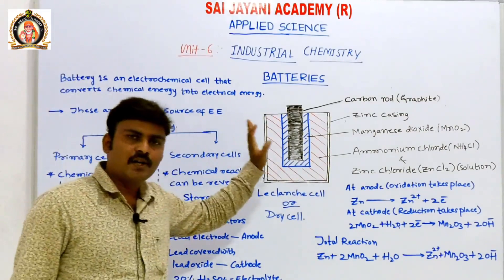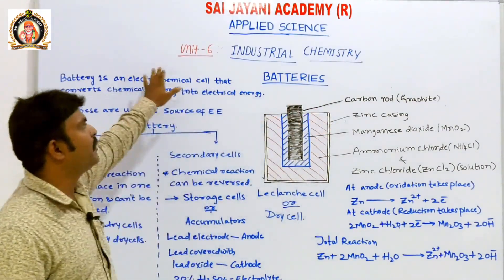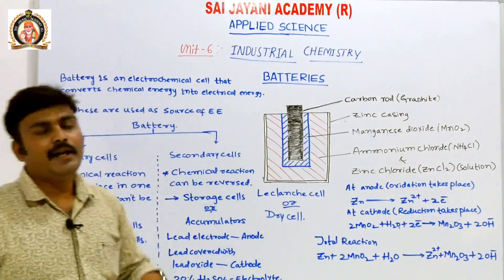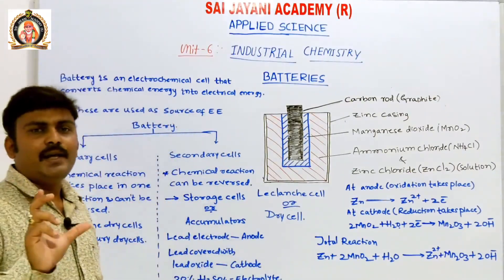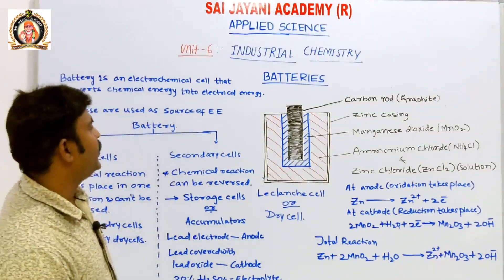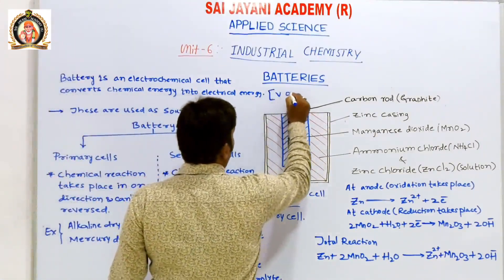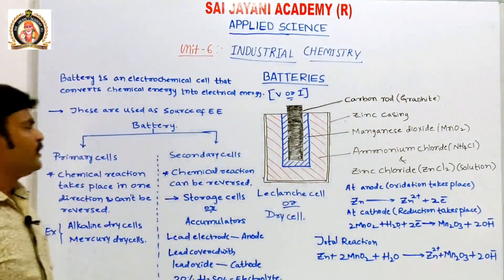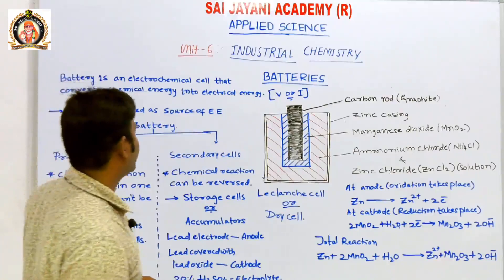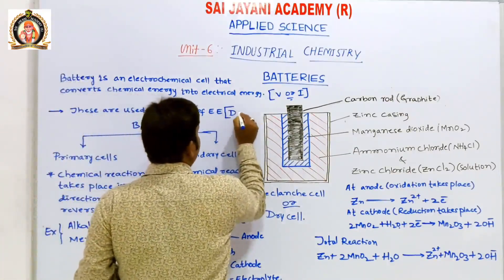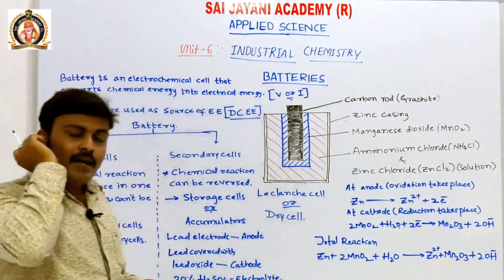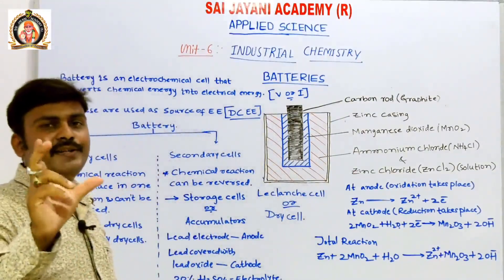In this session, let us discuss the concept of batteries in Unit No. 6 of Industrial Chemistry Applied Science. A battery is an electrochemical device or cell that converts chemical energy into electrical energy. Batteries can be used as sources of electrical energy — specifically, the DC form of electrical energy. Batteries produce only the pure DC form of electrical energy.